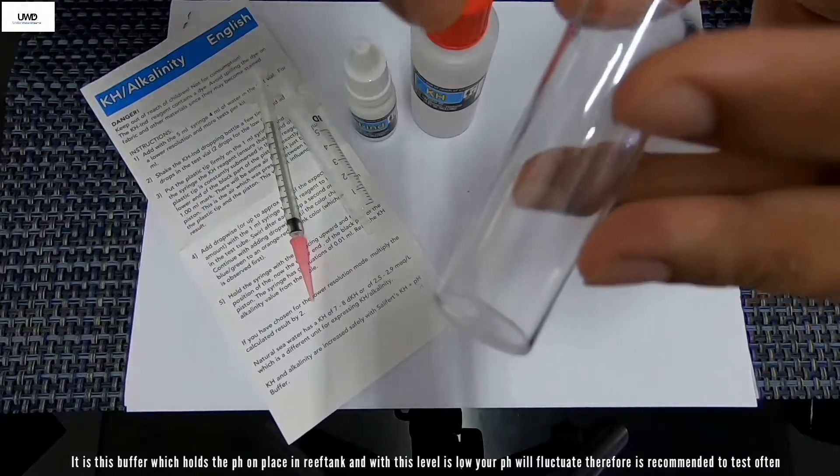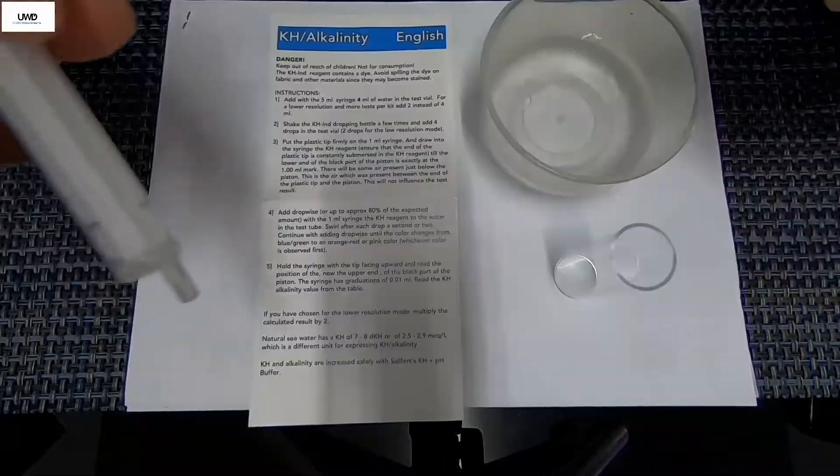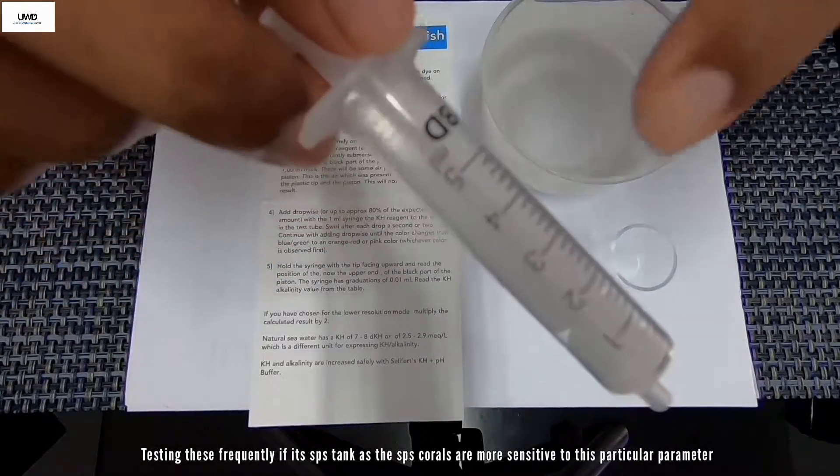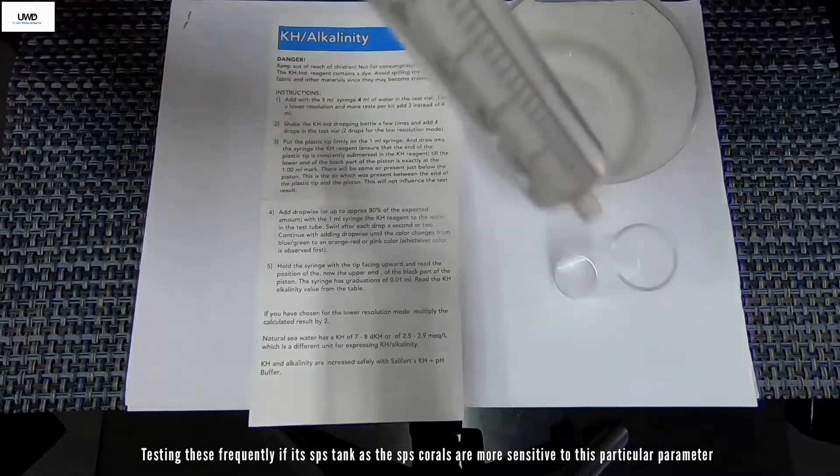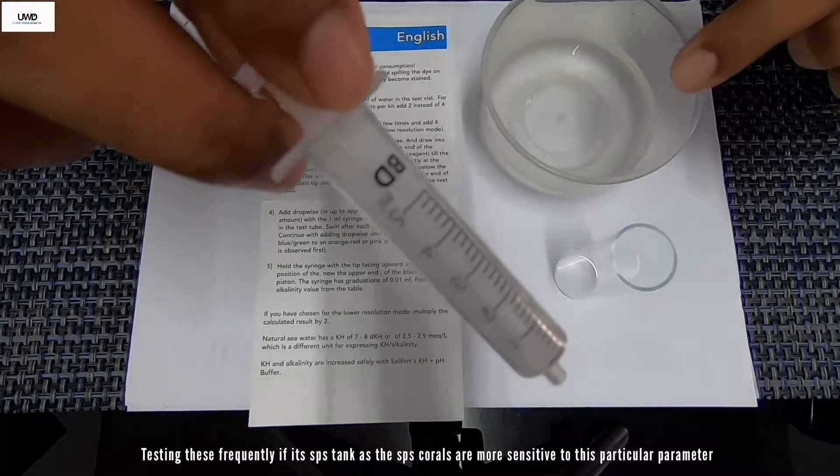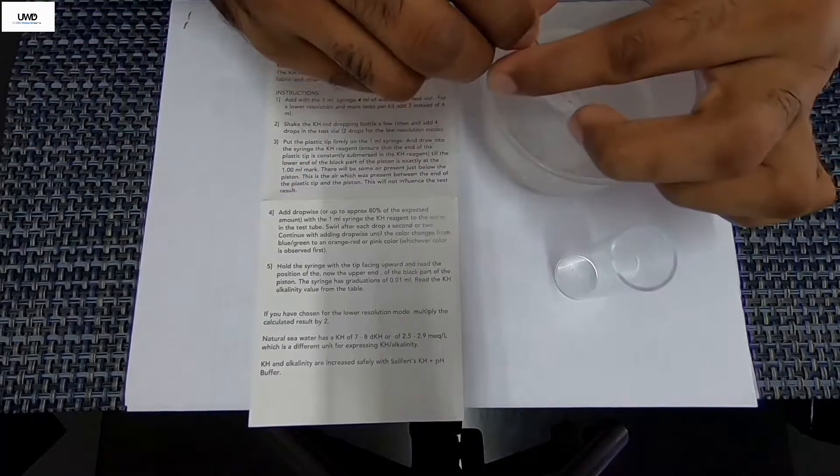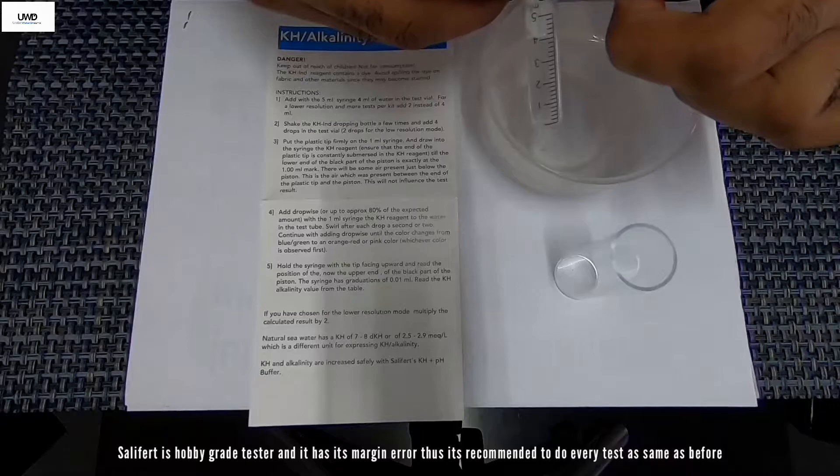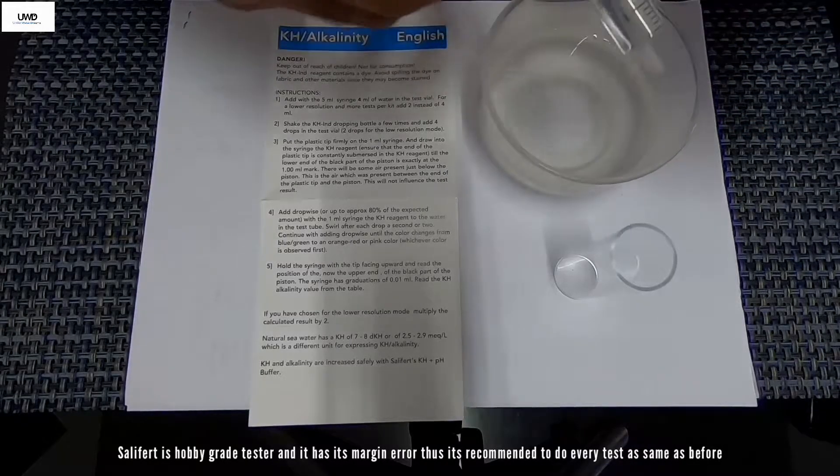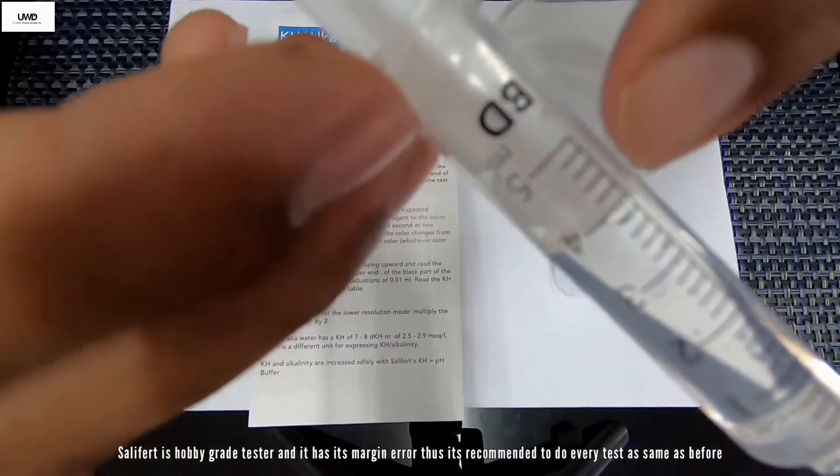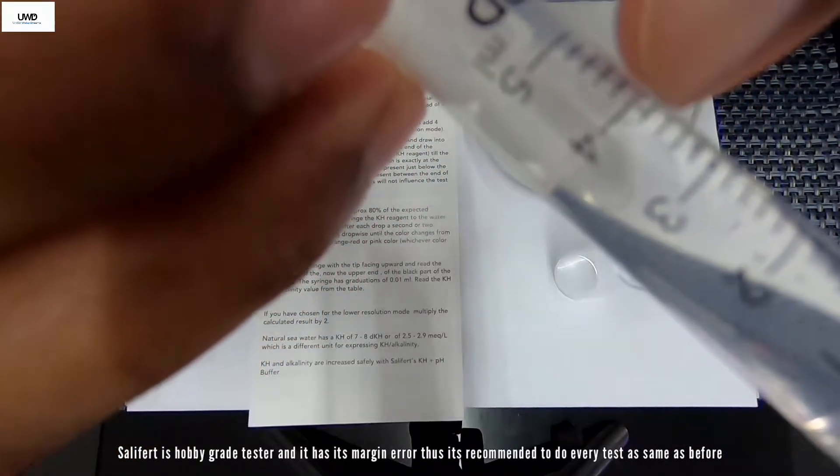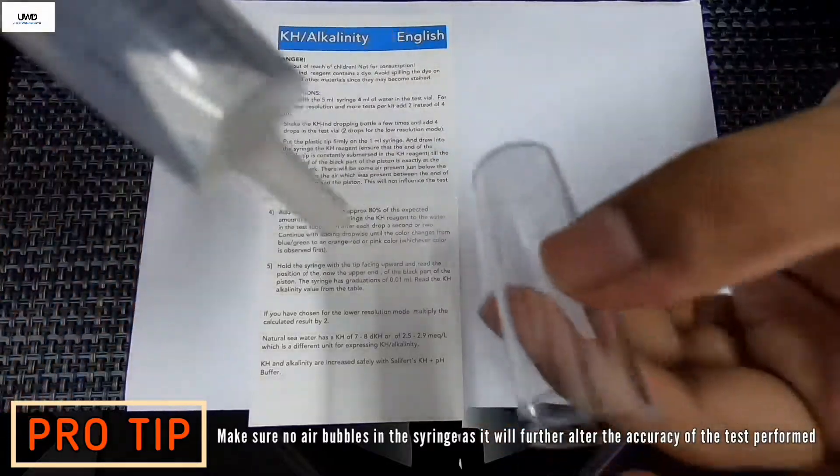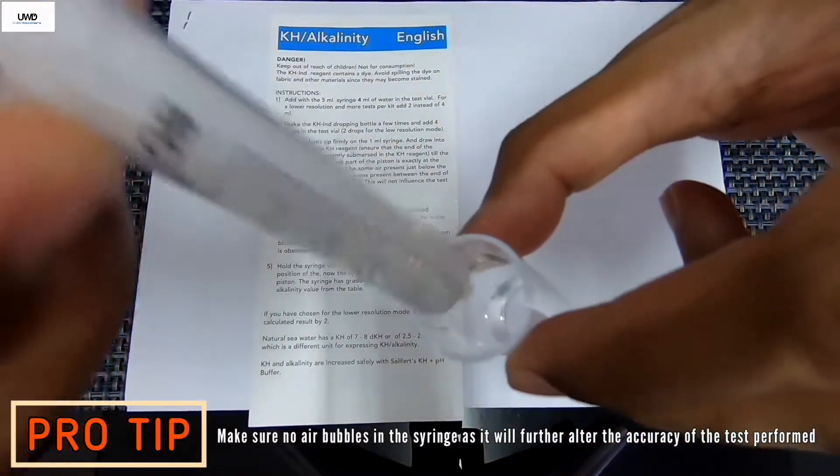First step, I'm going to be drawing inside this syringe 4ml of aquarium water or reef tank water. This is what we're going to be testing. While you're drawing inside here, make sure there's no bubbles and make sure the plunger is at the 4ml mark. Now I'm going to put this 4ml of water inside this test vial.